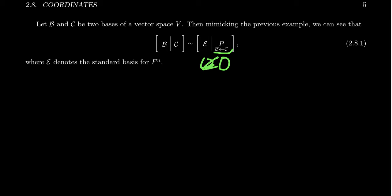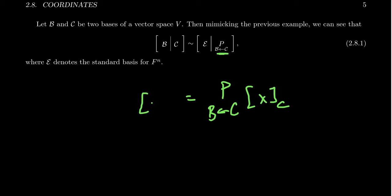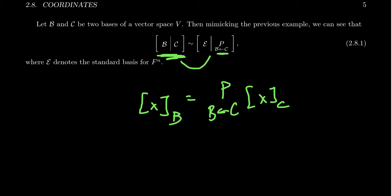The change of basis matrix will be the matrix on top. This further explains why we denote the change of basis matrix the way we do — with C on the right, B on the left, and the arrow transitioning from right to left. The change of basis matrix from C to B multiplies on the right by C coordinates and gives B coordinates on the left. You take your old basis C and put it on the right, take your new basis B and put it on the left, row reduce this matrix, and it will give you the change of basis matrix.